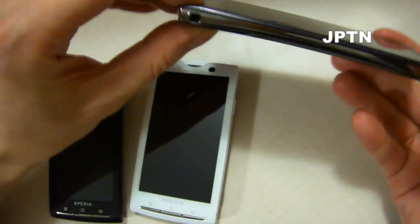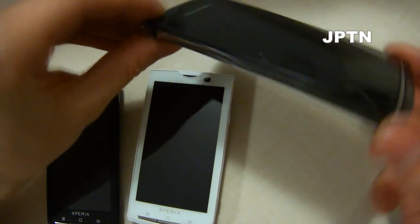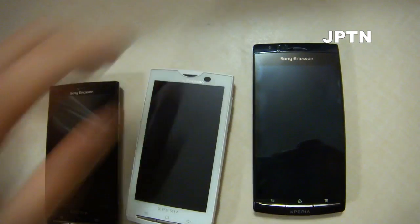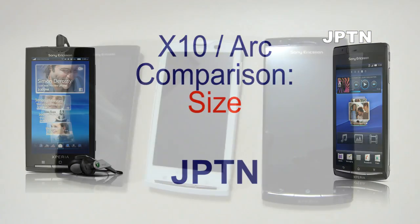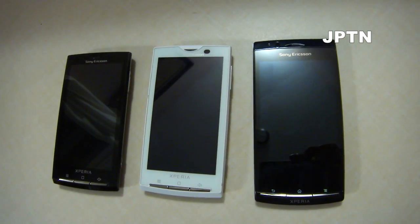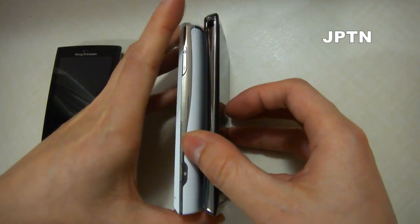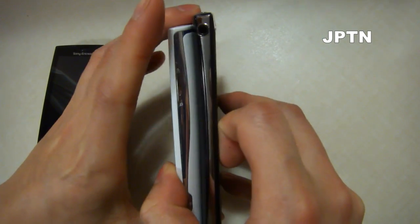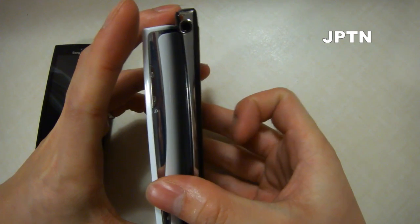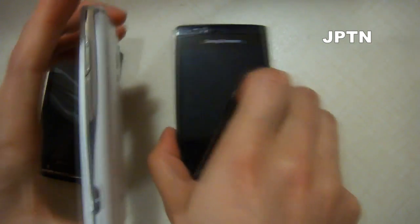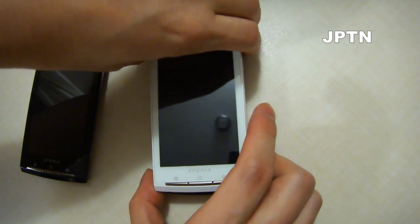It's definitely smaller and thinner and you can see the curve. The X10 is thicker than the Arc, but the Arc is slightly taller because it has a 4.2 inch screen as opposed to the 4 inch screen on the X10. Width-wise, they're pretty much the same.